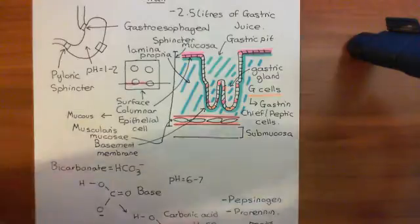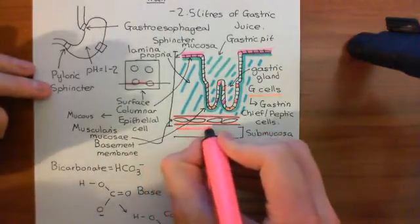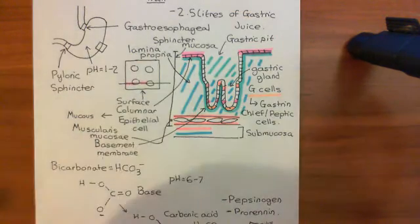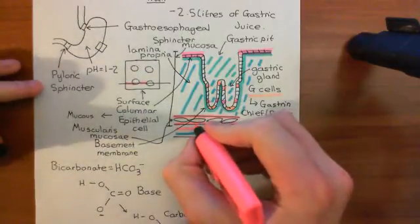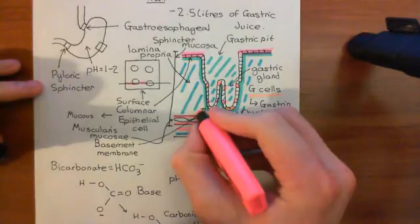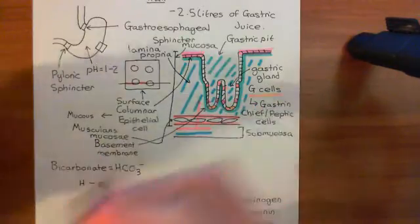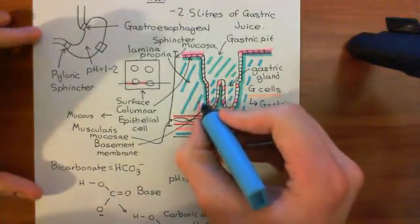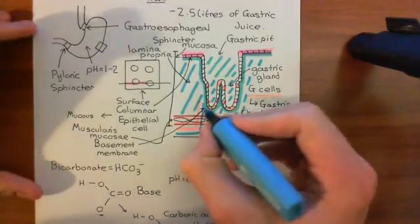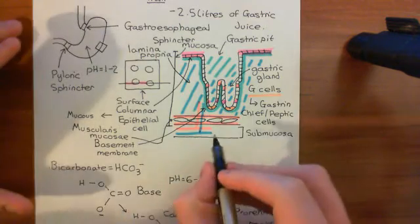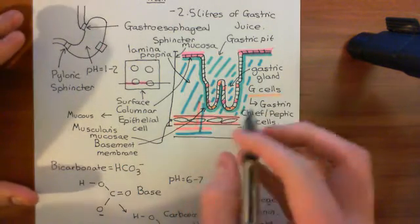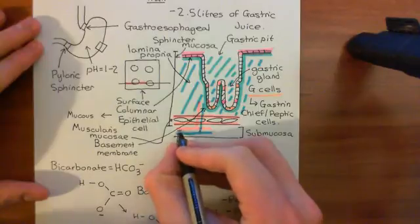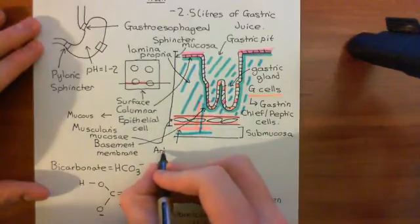Now what's in the submucosa? You'll have arterioles and venules. They will have smaller branches which come off them and go into the lamina propria — through the muscularis mucosae — and then branch into capillaries. The capillaries will reconverge to form little venules, which will go back and join the bigger venule within the submucosa. They supply the columnar epithelial cells and other cells in the lamina propria with blood.